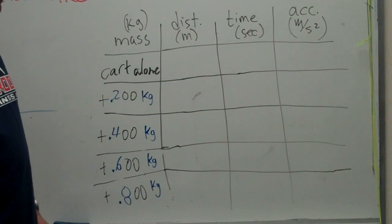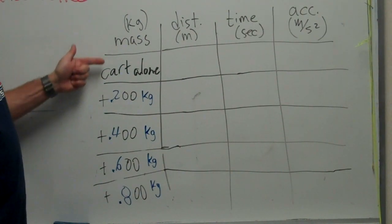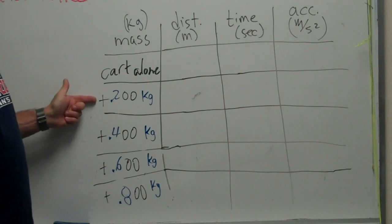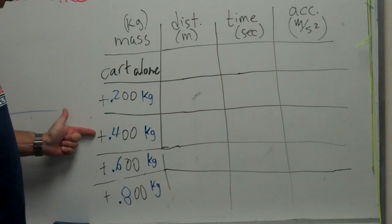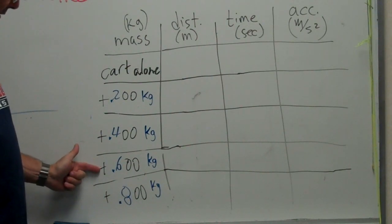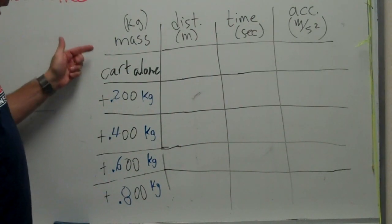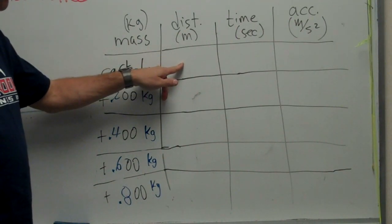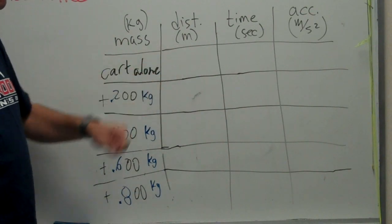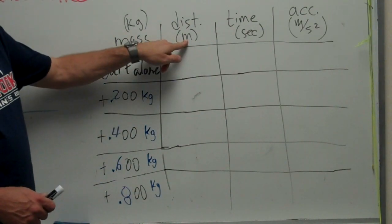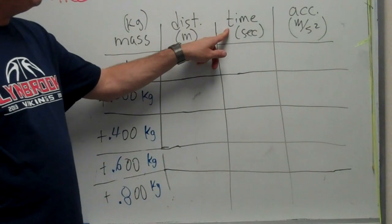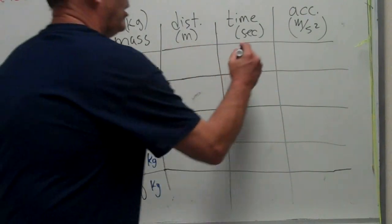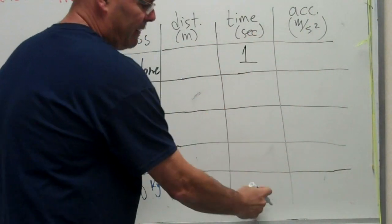Here's your data table that you'll fill in. First you'll enter the mass of the cart all by itself. And then the mass with 200 grams or 0.2 kilograms added, 0.4 kilograms added, 0.6, 0.8 for your five trials. This will be the distance from the cluster of dots to the dot number 60. And you'll record that in meters. This is the time that it took to do that. If you always measure the distance to the 60th dot, then this time will be one second for every trial.